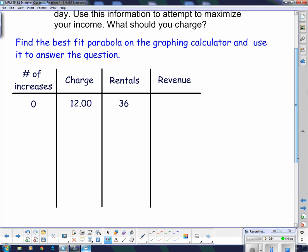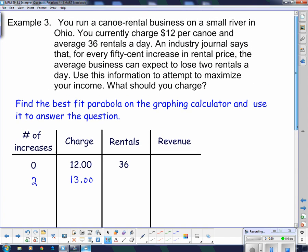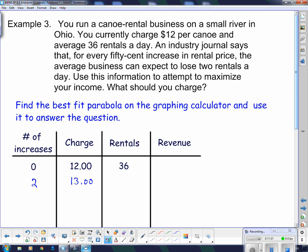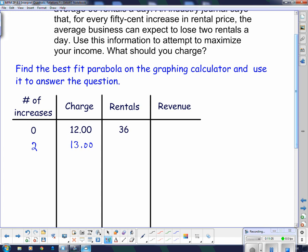And we're going to find the best fit parabola on here. So number of increases, if I increase it by, let's say, 2.50 cents, that's a total increase of 13, or that's going to charge $13. Because remember, we're increasing it by 50 cents. I'm going to go up in increases of two because it's much easier to add a dollar. So if I increase it by a dollar, that's two 50 cent rentals, or two 50 cent increases. This says I'm going to lose two rentals every time I increase it by 50 cents. So since I increased it by a dollar, I'm going to lose four rentals, so that's going to be 32.